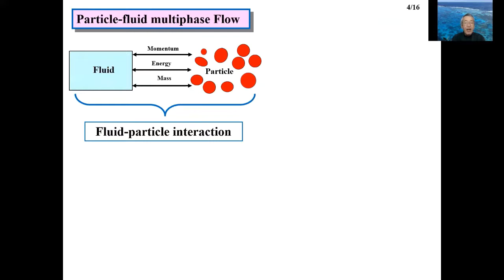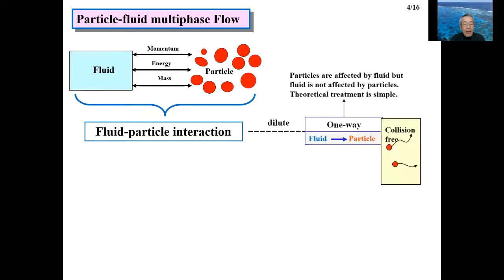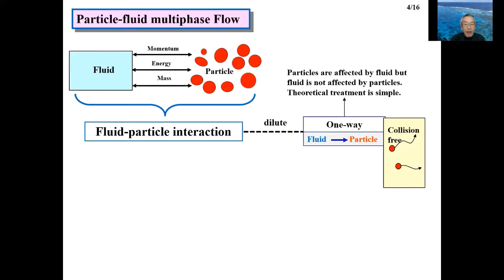Let's consider the interaction between particles and fluid in more detail. At low particle concentrations, it is assumed that fluid motion is not affected by the particles, though the particles move under the influence of the fluid. This kind of interaction is called one-way coupling. In one-way coupling, the inter-particle interaction can be ignored, and such a flow is called collision-free flow.